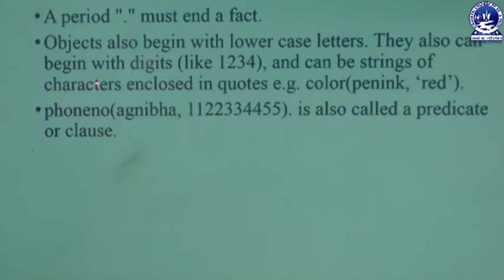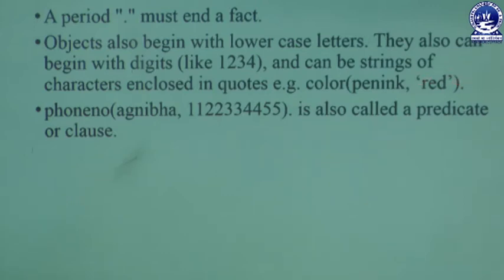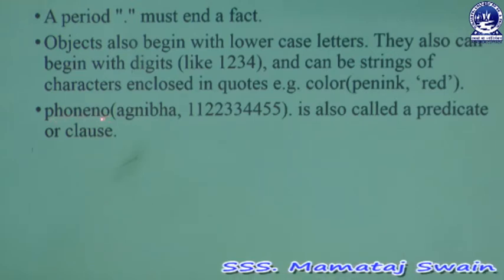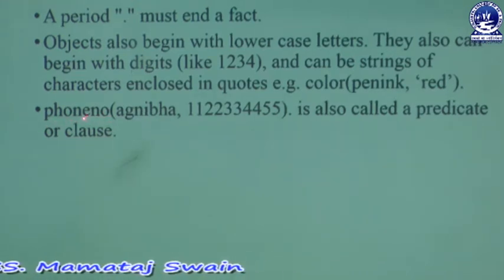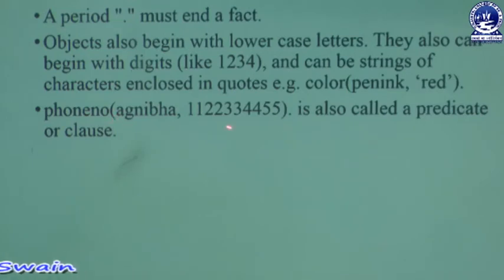Take one example: in this example, 'color' is the relationship and 'pen', 'ink', and 'red' are the objects — 'red' being an object enclosed within quotes. Another example is 'phone number': this is the relationship or property, and the two values are the objects. These are also called predicates or clauses. These are the different guidelines for writing facts.